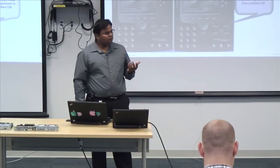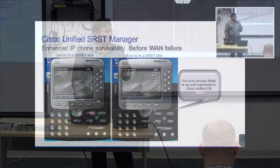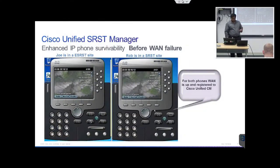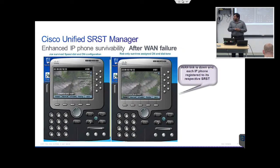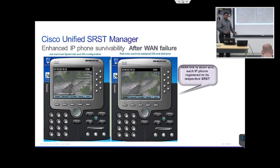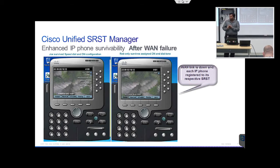Here are two phones — one configured for Enhanced SRST and one for classic SRST. In SRST mode, once you lose WAN connectivity, you can see that Rob's phone has only the primary DN and that's it. Whereas Joe's phone over here has all its features to survive. So that's the first thing we did with Enhanced SRST.